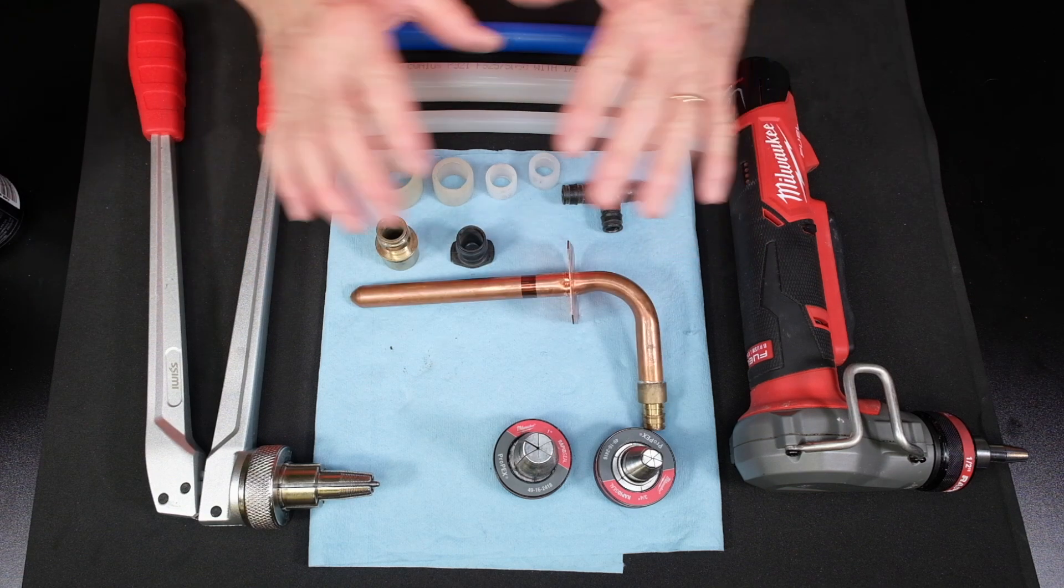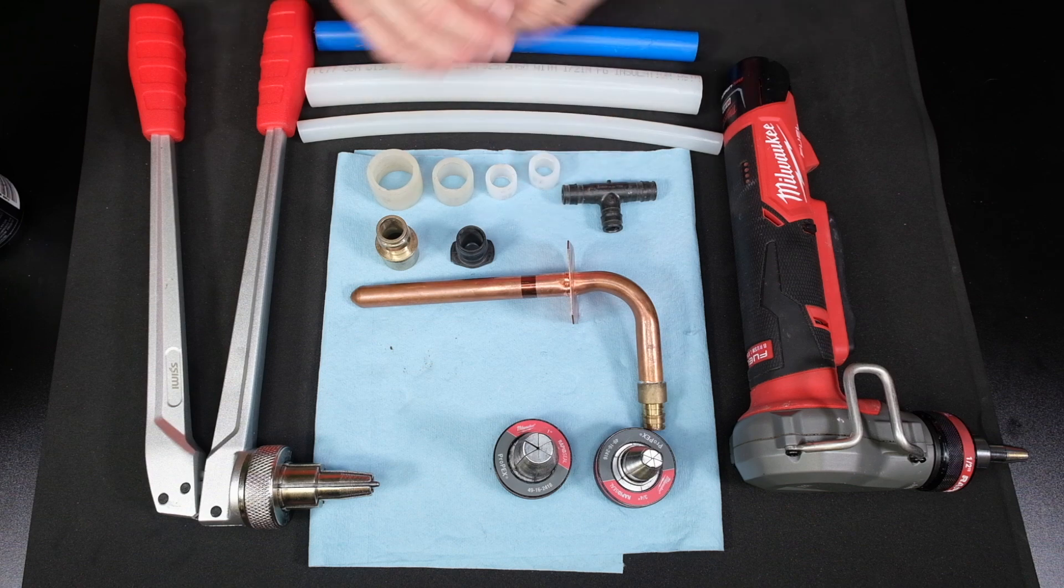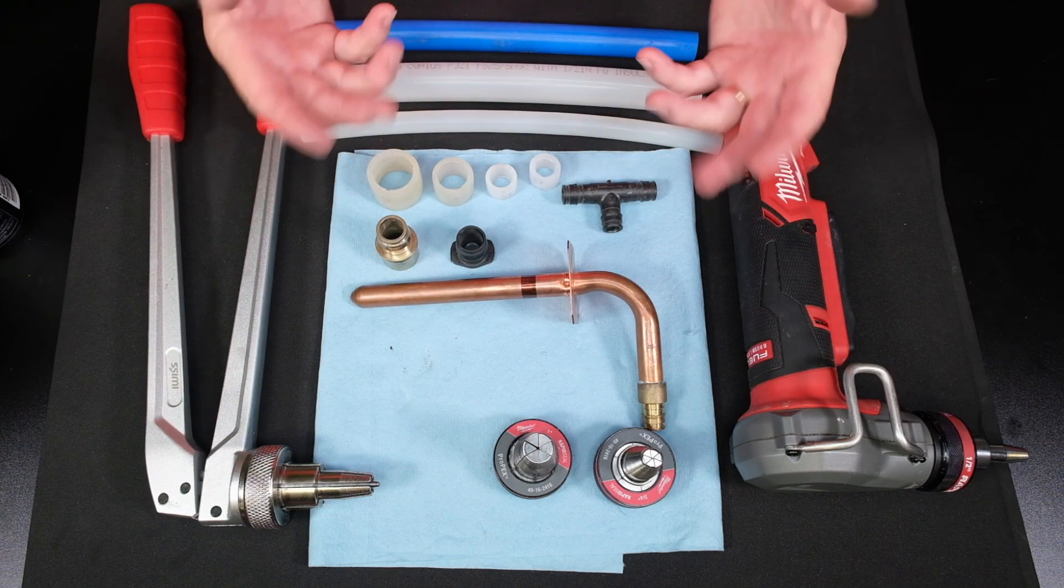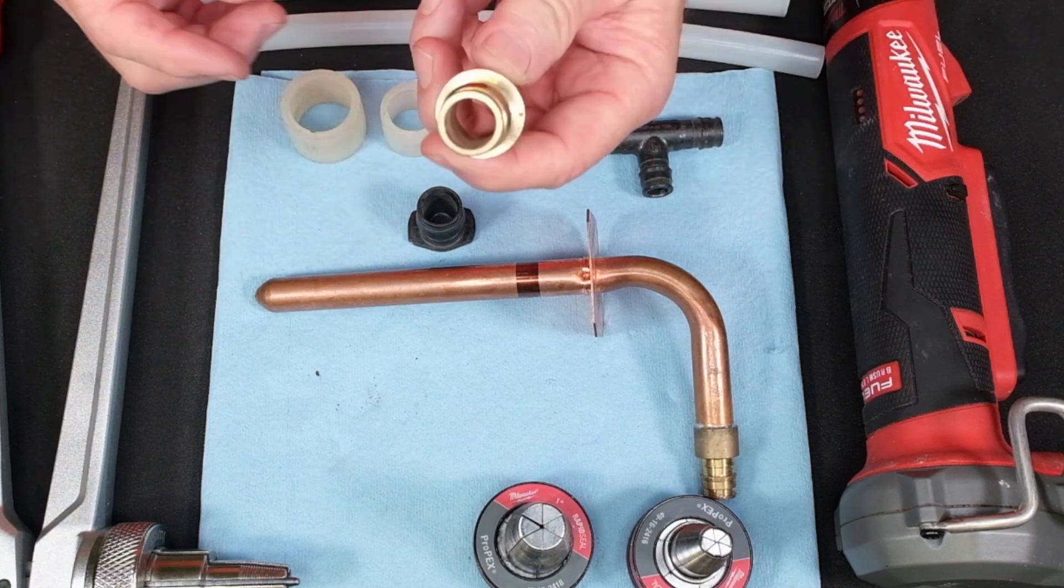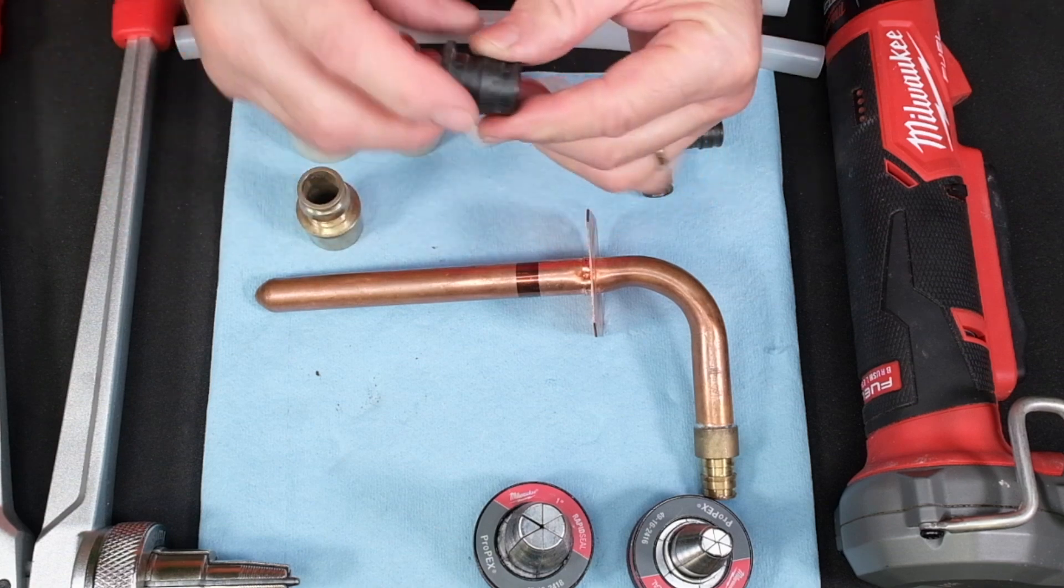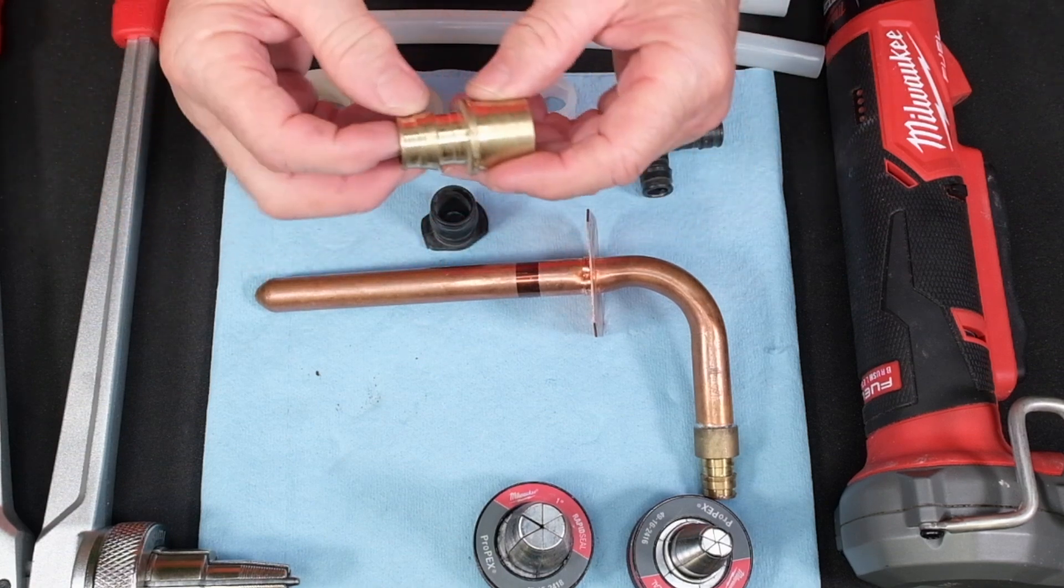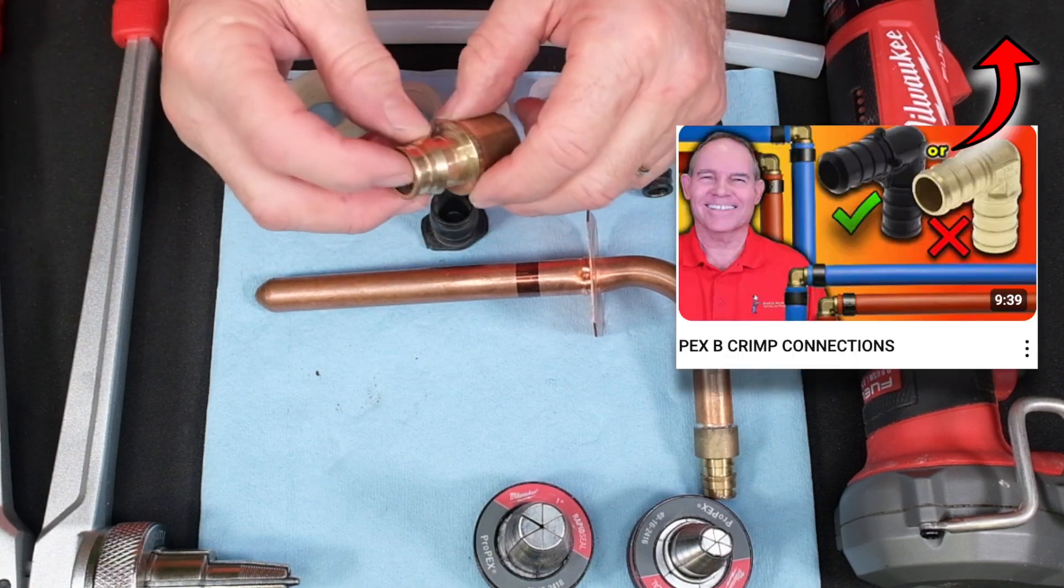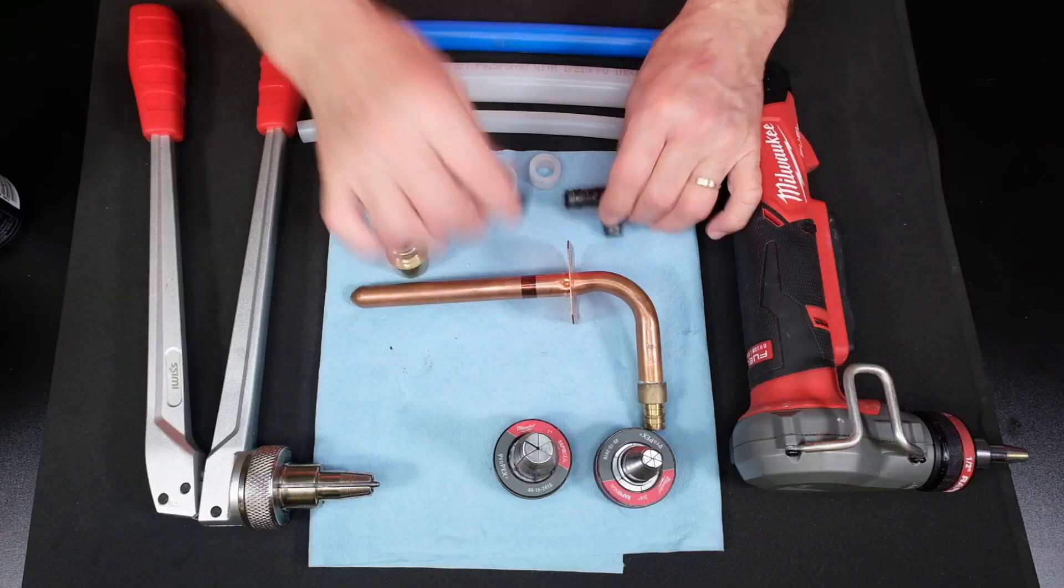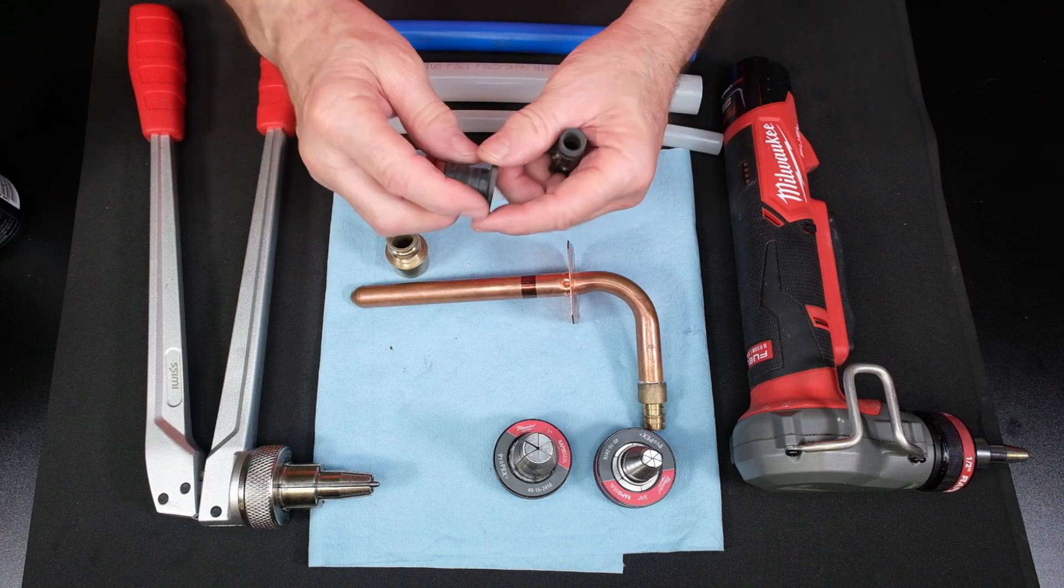So here we have PEX-A fittings, PEX-A tools, how we install them, PEX-A rings, and the different types. We have brass PEX-A fittings. We have composite. Again, like we were talking earlier, a lot of us are using composite fittings now because we're worried that too much calcium is going to build up in these fittings. So the composite fittings seem to work very well.